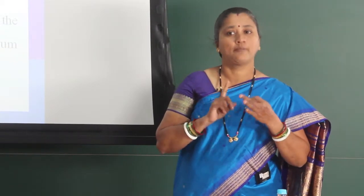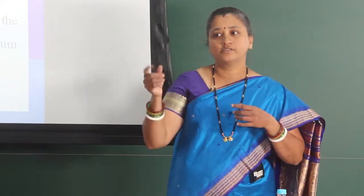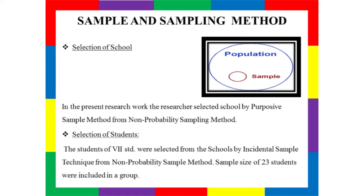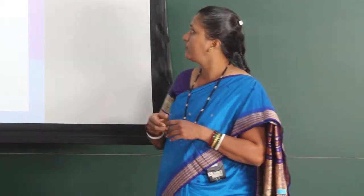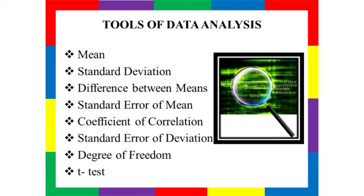The test questions covered knowledge, comprehension, and application, consisting of fill in the blanks, true or false, give reasons, drawing, and long answer questions. The population was infinite, drawn from non-aided schools in Pune city. The sample was chosen by purposive and incidental sampling methods, with a sample size of 23 students. The tool for data collection was the pre-test and post-test using the same question paper, and analysis used mean, standard deviation, correlation, and t-test.